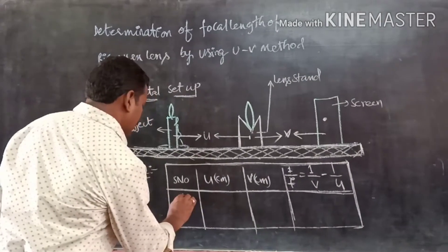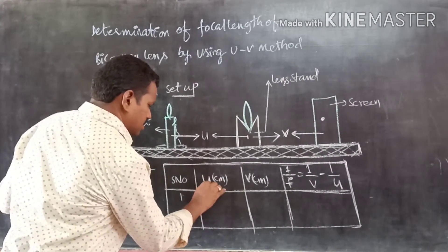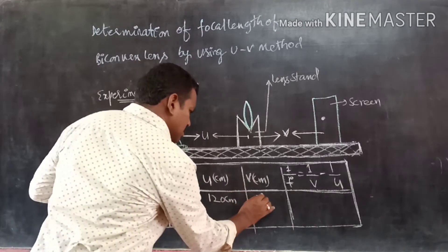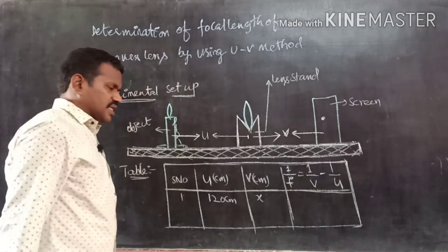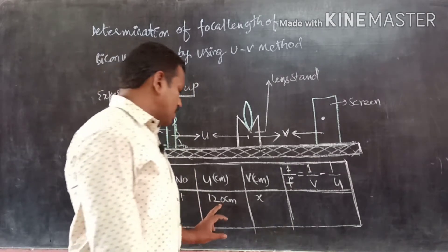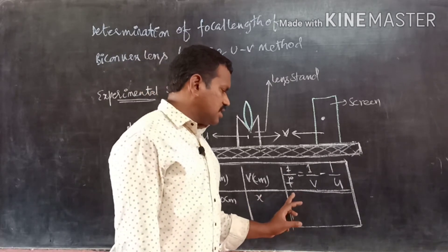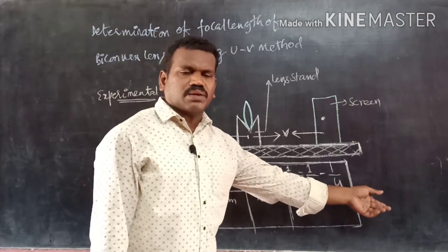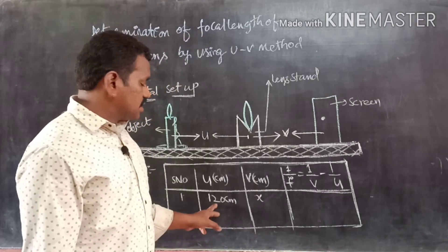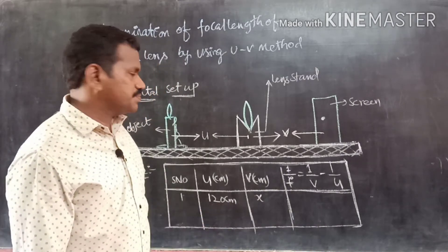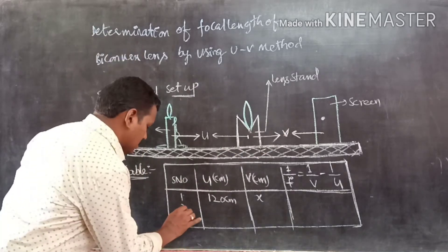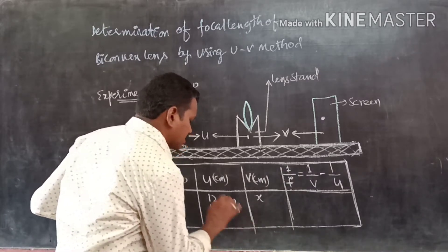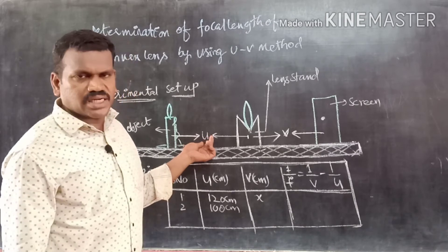For example, in serial number 1, the object distance u is 120 cm. At the image distance, some value will be there — let's call it x cm. By substituting 120 cm and x cm into the formula 1/f = 1/v − 1/u, we can get the focal length of the biconvex lens when the object is at 120 cm. In the second case, serial number 2, we place the object at a distance of 100 cm, so the object distance is 100 cm.